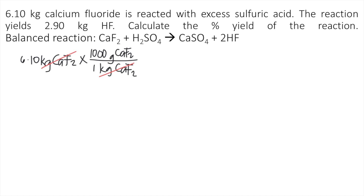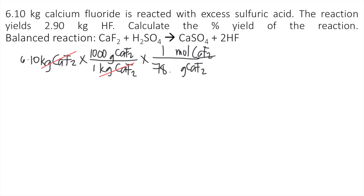The next step is to convert grams of CaF₂ into moles of CaF₂ using the molar mass of CaF₂. You can find this by looking at your periodic table and adding the molar masses of calcium and 2 fluorines. So 1 mole of CaF₂ equals 40.08 plus 2 times 19, giving 78.08 grams of CaF₂ per mole. The grams cancel out and now we have moles of CaF₂.